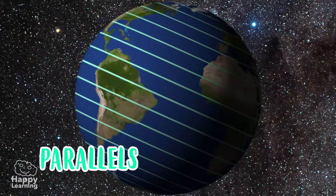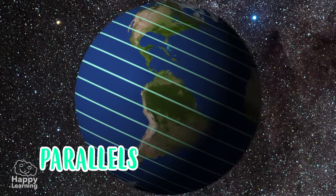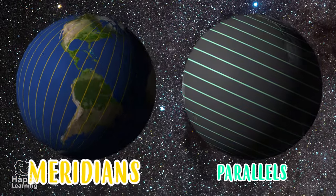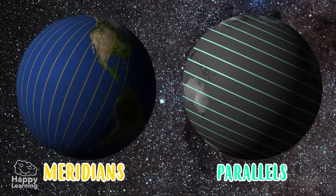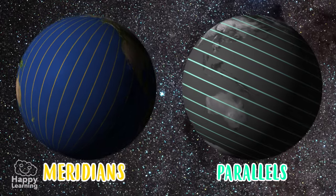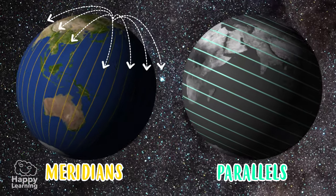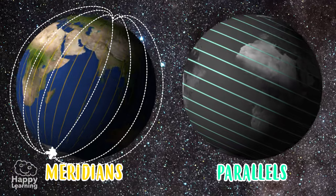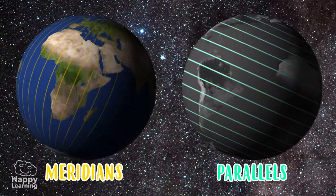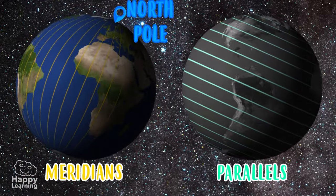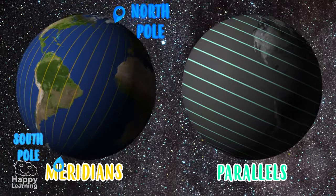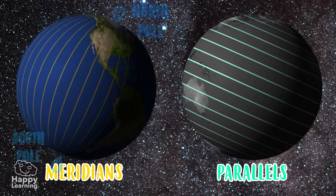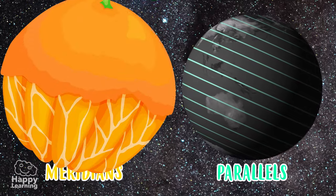We already know the parallels. Now it's time for the meridians. The meridians are semi-circular imaginary lines that go from the North Pole to the South Pole, just like the segments of an orange.